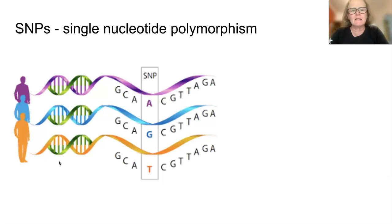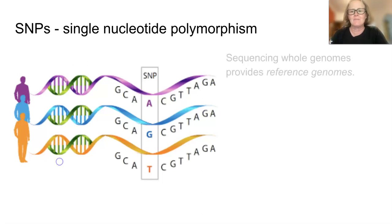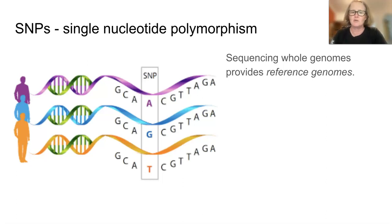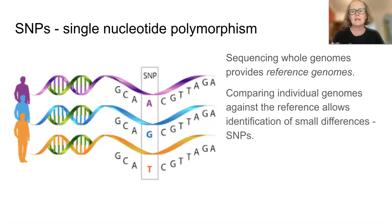A SNP, just a reminder, is a single nucleotide polymorphism. You have actually met this idea already because a SNP really is just a change in DNA — so a mutation. What we do to find SNPs is we sequence whole genomes to get reference genomes, something to compare to. Then we take an individual with something interesting happening and we compare their genome against the reference genome, and we look for small differences — single nucleotide polymorphisms.